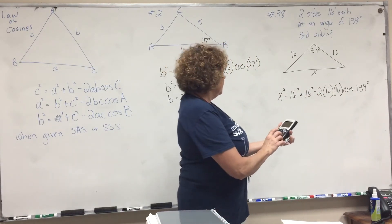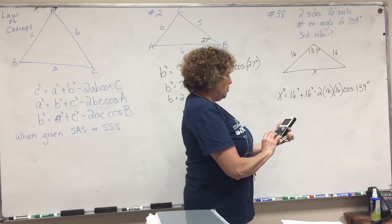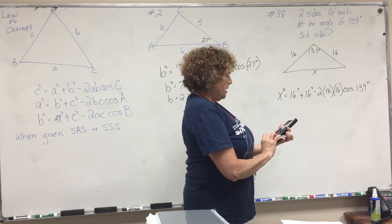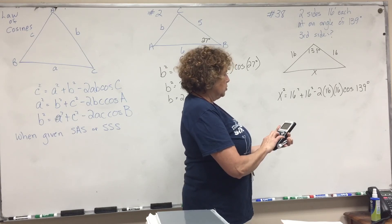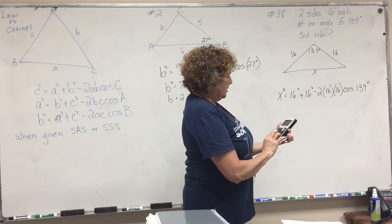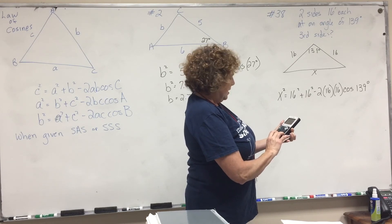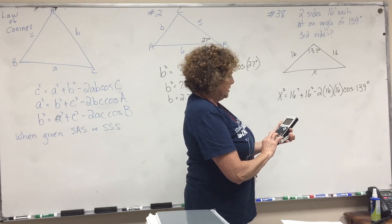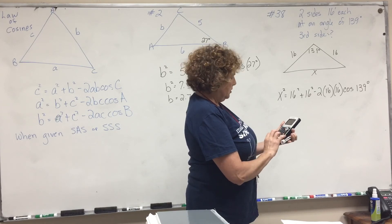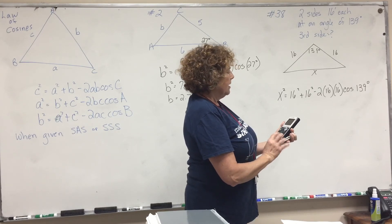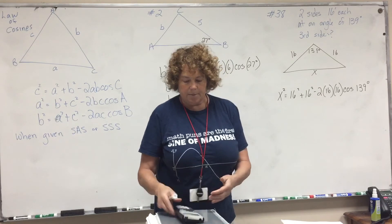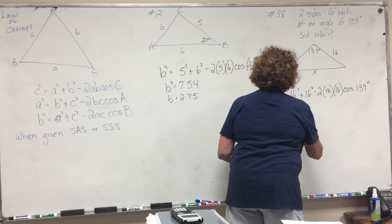So if we do this, we get 16 squared plus 16 squared minus 2 times 16 times 16 times cosine of 139. And we get 898.4 as x squared.